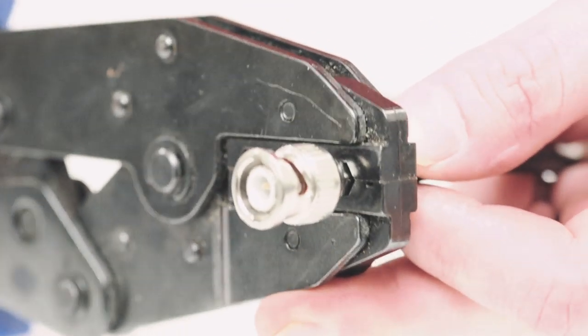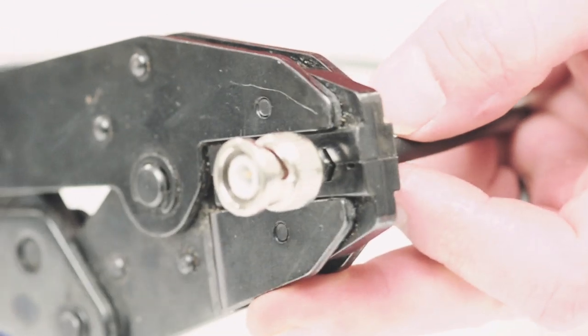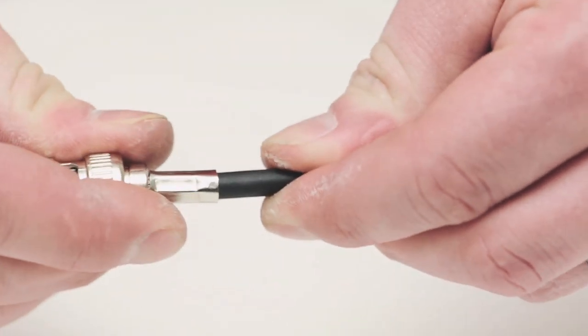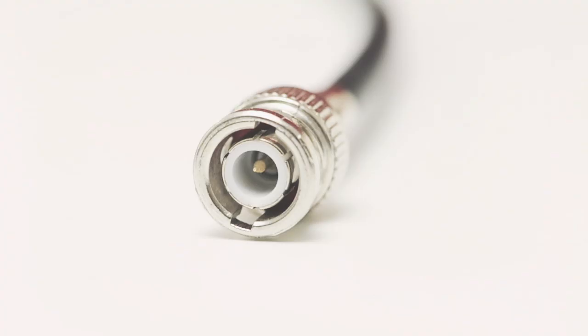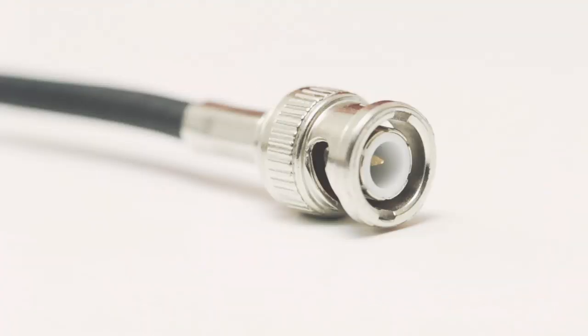Taking your crimp tool, crimp the ferrule onto the jacket. This pinches the ferrule against the jacket and holds the connector on. Give it a slight tug to make sure it's on tightly, and you have successfully installed a BNC male connector.